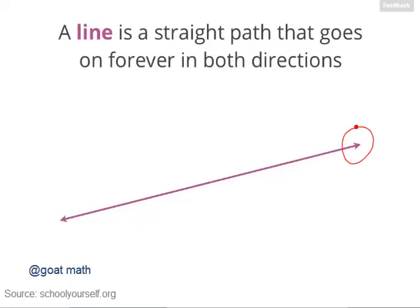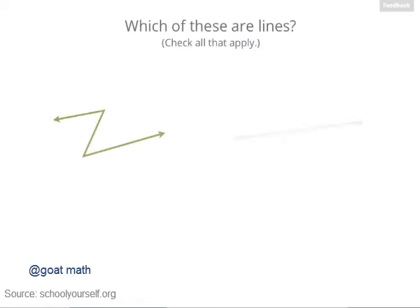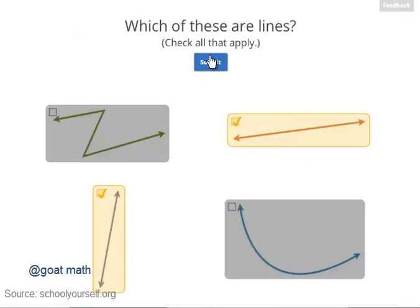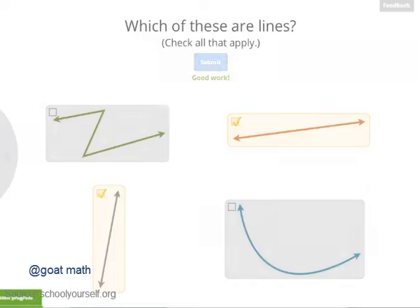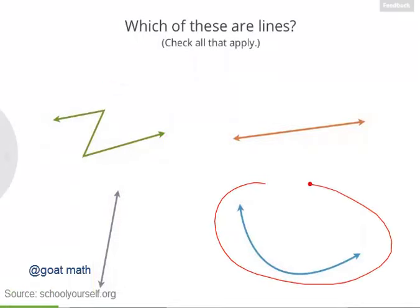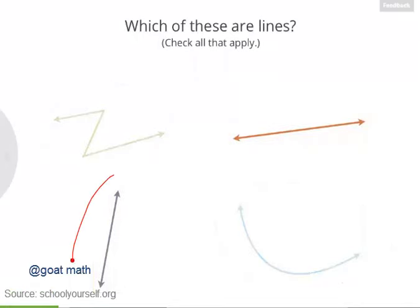When you see an arrowhead in geometry, that means it continues on forever in that direction. Keeping in mind that lines are straight paths that go on forever in both directions, which of these are lines? The zigzag and the curve are not straight paths, so those two straight ones are the lines.